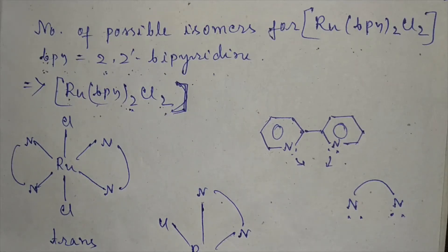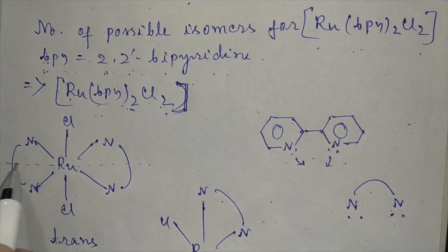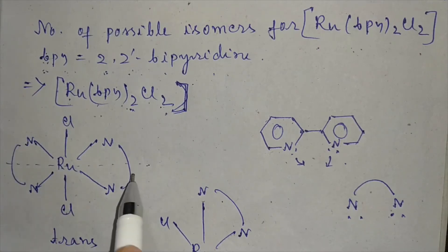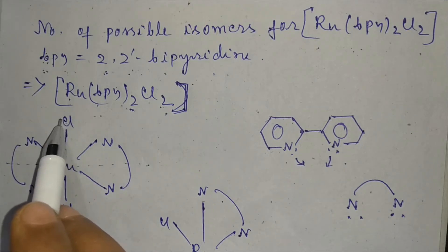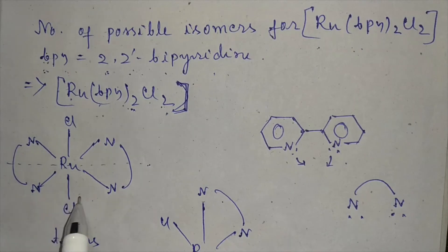Now in this molecule, in this geometry, there is a plane of symmetry. If we pass a plane bisecting these two ligands and across this Cl-Ru-Cl bond, there will be a plane of symmetry. Another plane of symmetry is there across this Cl-Ru-Cl bond and perpendicular to the plane containing four nitrogen atoms. So this is an optically inactive molecule.